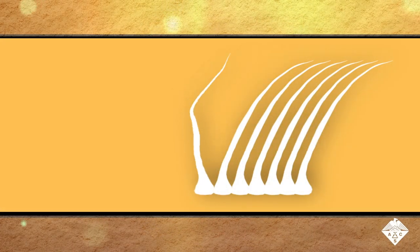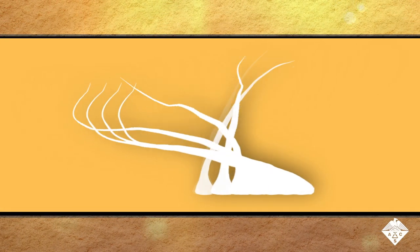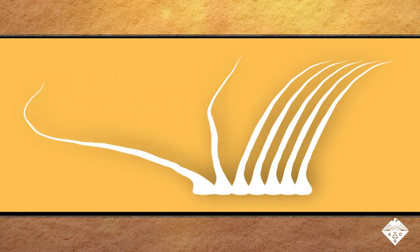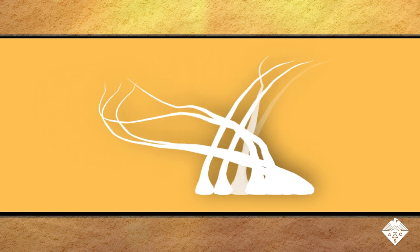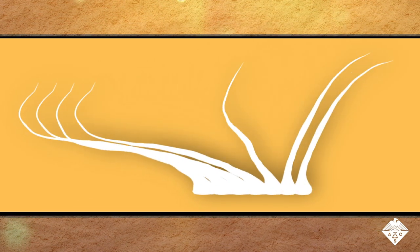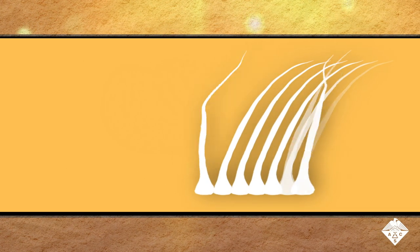In nature, as cilia flap one by one, they produce a traveling wave. But copying this rippling effect with artificial materials requires sophisticated moving parts, and artificial cilia have been too large for many applications.